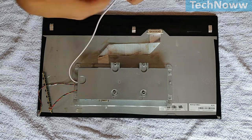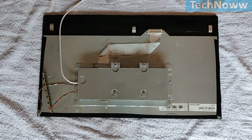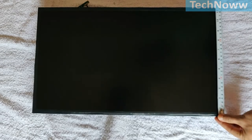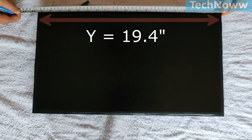I did not want to use power cable with this screen so I soldered the power output. Now measure the width and height of the screen and note down these values. In my case, X is equal to 11.4 inches and Y is equal to 19.4 inches.